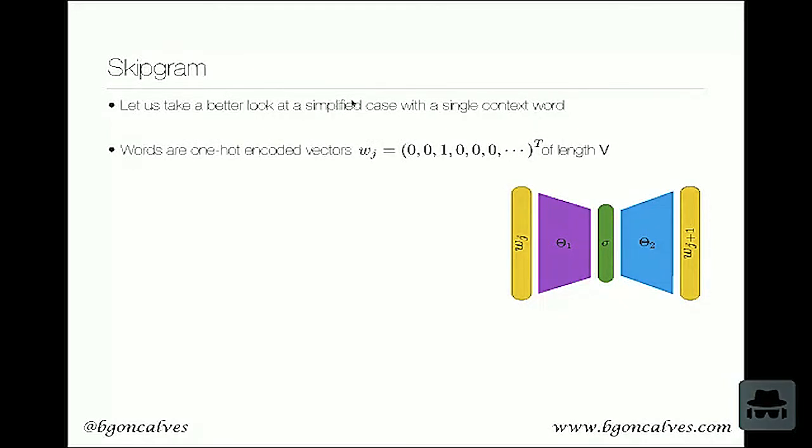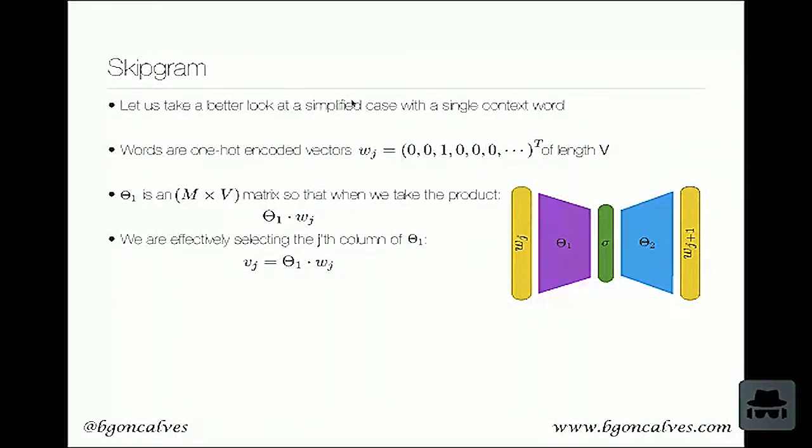So instead of keeping going back and forth between the two types of models, let's focus instead on a single model. Let's focus on the skip-gram, just to clarify some. And let's simplify it a little bit and say that we have one word, and we're trying to predict exactly what is the next word. Let's say instead of having two or four or twenty words to predict, we predict just one. This will simplify the math a little bit and it'll make it easier for us to understand. As I mentioned, words are one hot vectors, and this is both for the input and for the context. Theta-1 is the M times V matrix. So what this means? M is the number of hidden units. V is the vocabulary size.